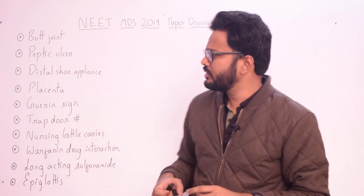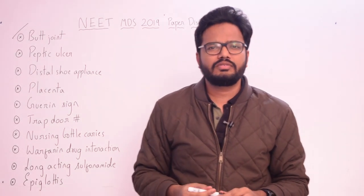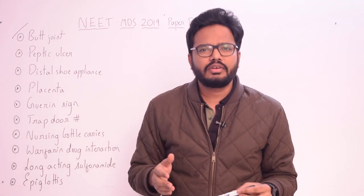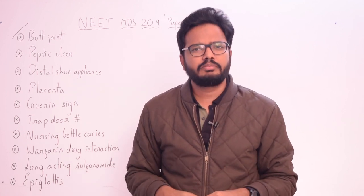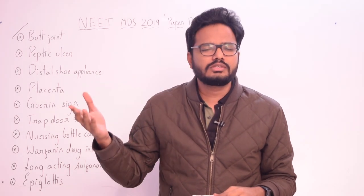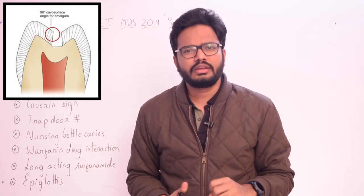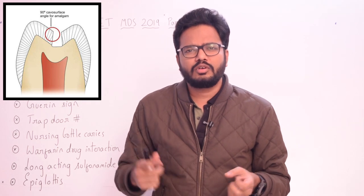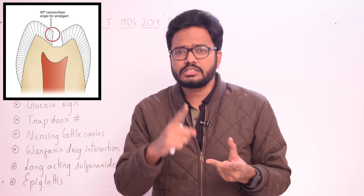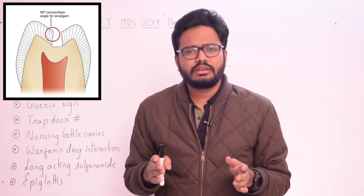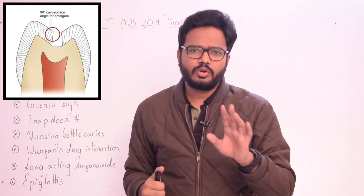Starting with butt joint: the cavosurface margin is a junction between a prepared surface and an unprepared tooth surface, whereas the cavosurface angle is the angle between these two surfaces — the prepared surface of the cavity and the unprepared tooth surface. Whenever this cavosurface angle is 90 degrees, it's called a butt joint. We preferably go for butt joint in amalgam restorations, ceramic restorations, and composite restorations on root surfaces. If the cavity preparation extends onto the root, we don't place a bevel — we go for butt joint only.